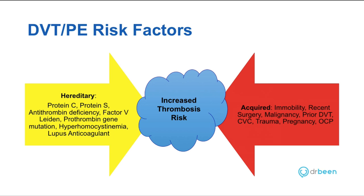The mechanism of hyperhomocystinemia is less well understood. Lupus anticoagulant actually describes antibodies to phospholipids on cell membranes. It's a misnomer to call it lupus anticoagulant because in fact it results in a prothrombotic state. Moving on to acquired risk factors for increased thrombosis: immobility, recent surgery, malignancy, prior DVT or pulmonary emboli, central venous catheters, trauma, pregnancy, and exogenous estrogen are all acquired factors that can lead to an increased risk of thrombosis formation.